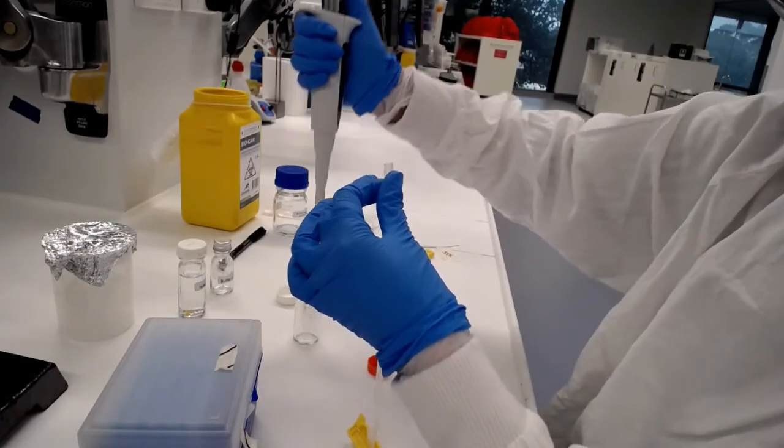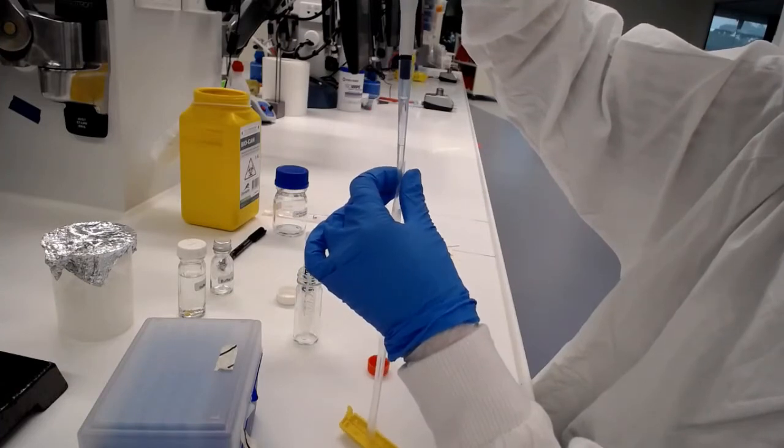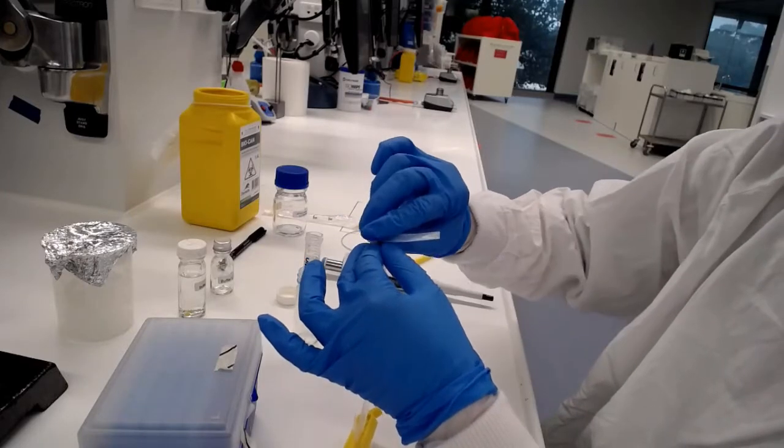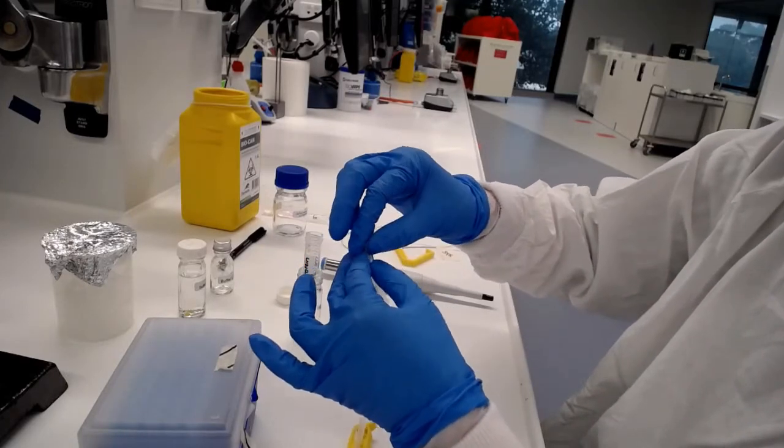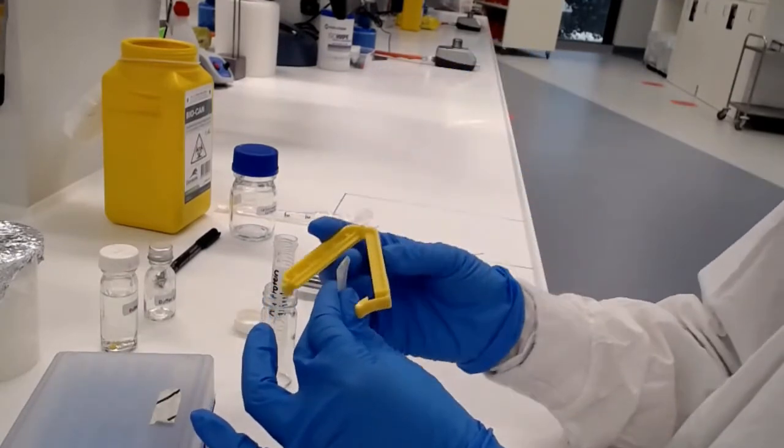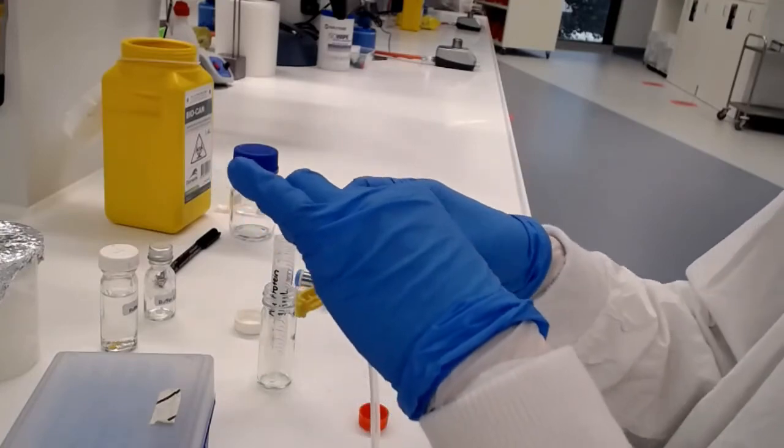That solution should be gradually falling down into the bottom of the dialysis tubing as we load more and more of it into the top. It's very important to clip the bottom first before adding our protein. Once we've squeezed out the air bubbles, we're going to then double over the other end of the tubing and clip it tight with the second dialysis clip. Now that tubing is tightly closed.